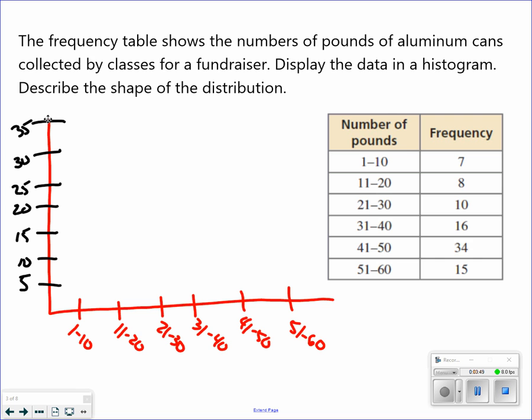And so now, number of pounds from 1 to 10, there were 7 of those. So I'm going to go up to 7 and come across here. And remember, histograms are connected. So the next one, there's 8. So it's slightly higher than the last one. And the next one goes up to 10. So again, slightly higher than the last one. 16. All the way up to 34. And then 15.